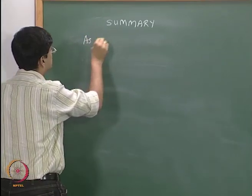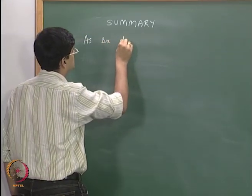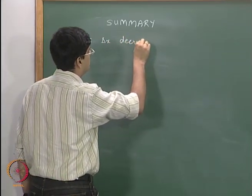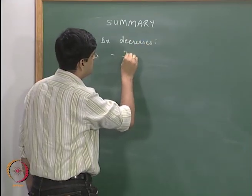So, as delta x decreases, truncation error decreases.